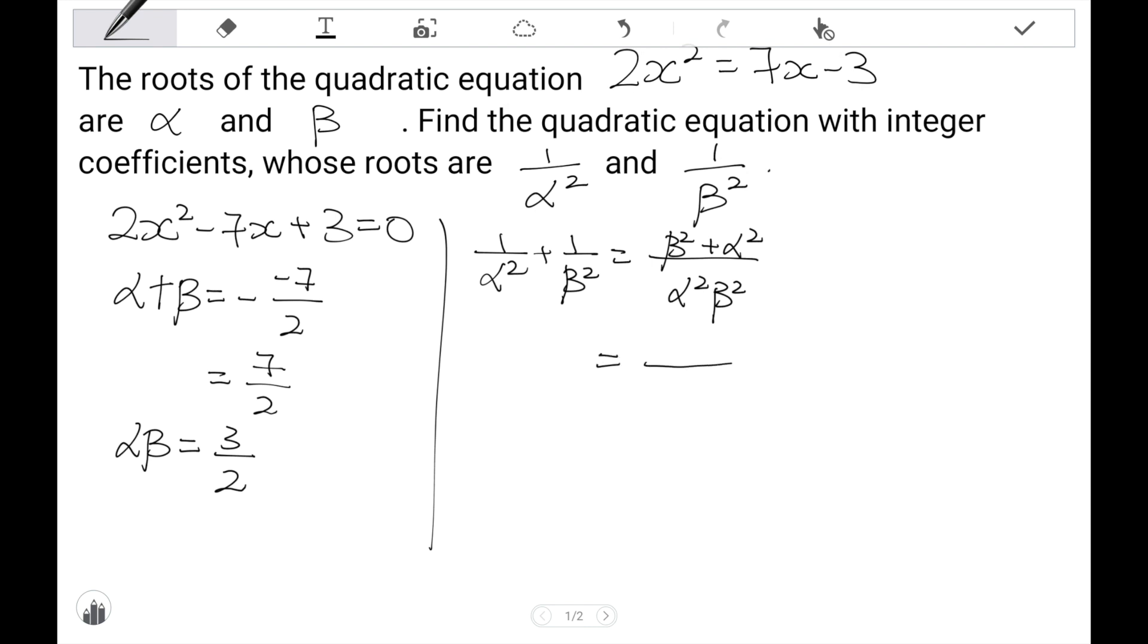And if you recall, on the next page I showed you, the very useful formula to use is the alpha squared plus beta squared equal to alpha plus beta bracket squared minus 2 alpha beta. For the denominator, I'm going to group it together as alpha beta bracket squared.